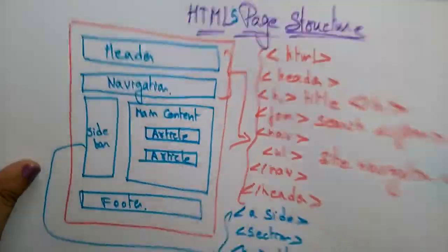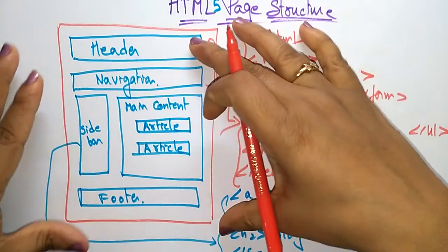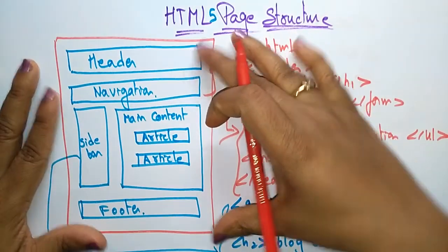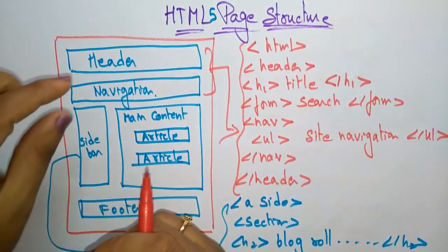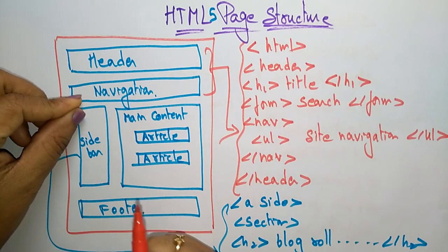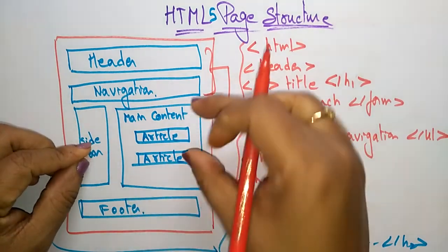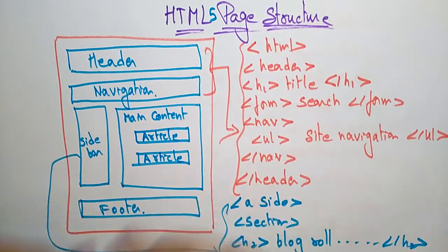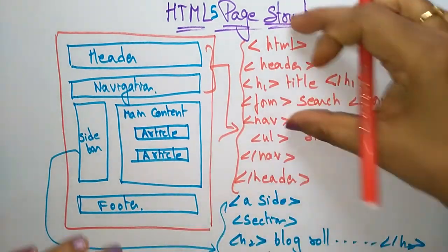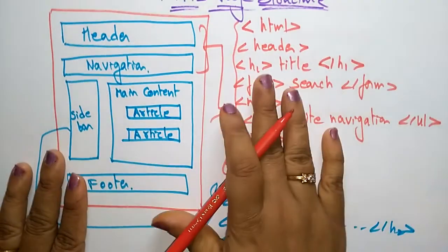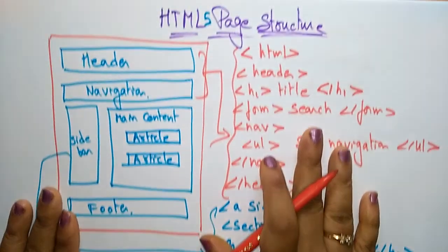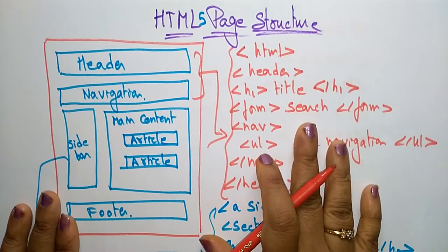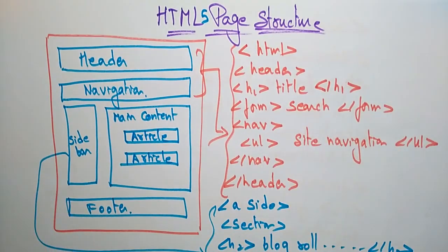This is the complete structure of an HTML page. The page consists of header, navigation, sidebar, main content, and footer. These are the related tags for each section of the HTML5 page structure.